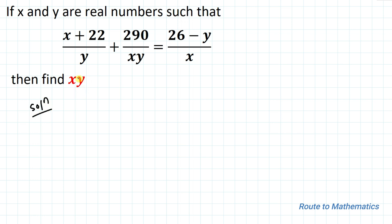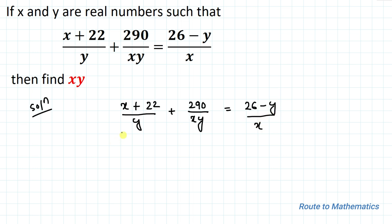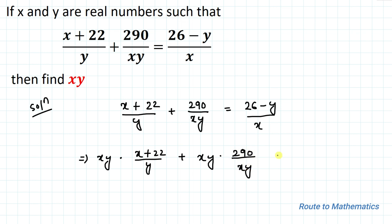So we have one equation: (x + 22)/y + 290/xy = (26 - y)/x. In the next step, let's multiply xy on both sides. We get xy·(x + 22)/y + xy·(290/xy) = xy·(26 - y)/x. The y's cancel, the xy's cancel, and on the right-hand side x and x cancel out.